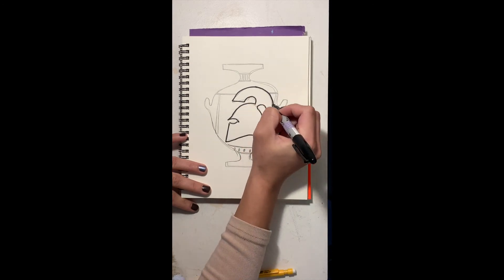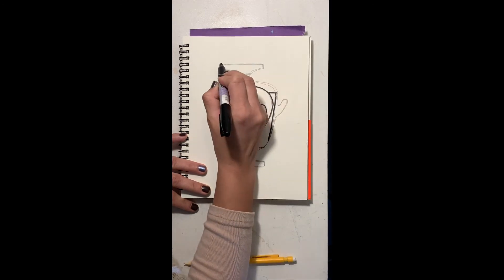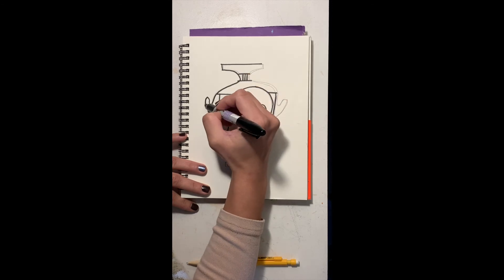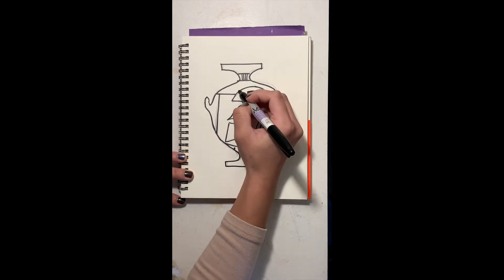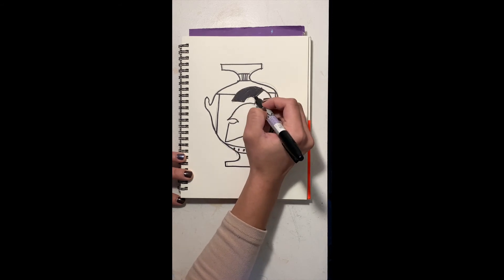And then I'm gonna color it in. Remember we are making black figure pottery so our main image should be colored in black. So I'm gonna outline everything first and then color in my Spartan helmet.